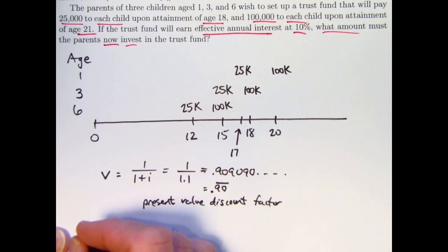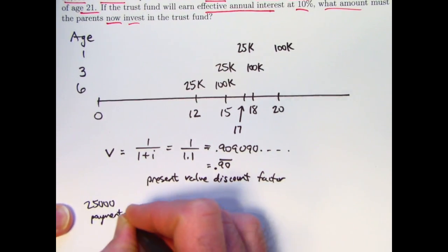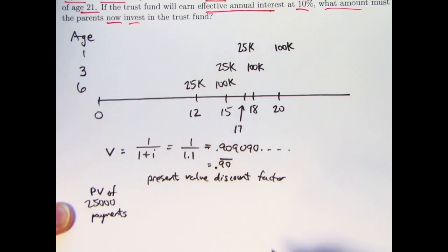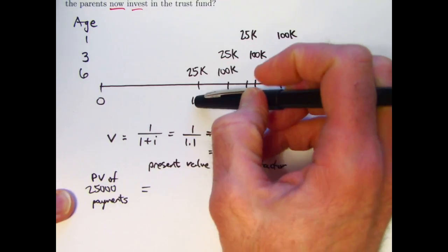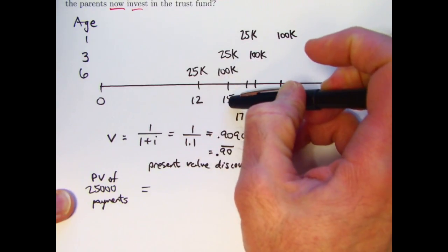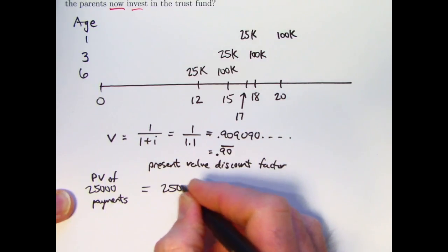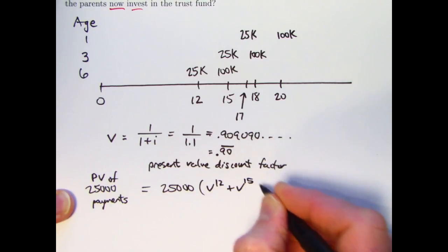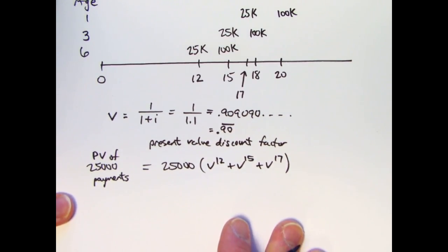So let's first focus on the $25,000 payments. What is their present value? Well, you'd take 25,000 times V to the 12th, plus 25,000 times V to the 15th, plus 25,000 times V to the 17th. You can factor 25,000 out and write this as 25,000 in parentheses V to the 12th plus V to the 15th plus V to the 17th. So that's the present value of the 25,000 payments.